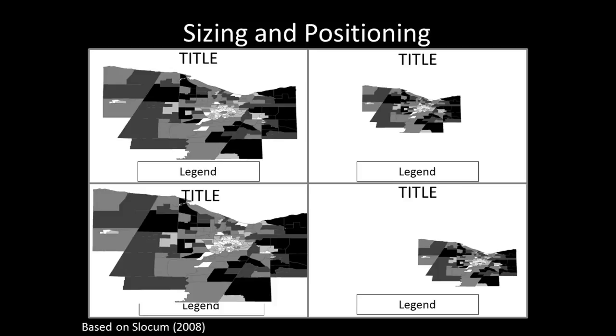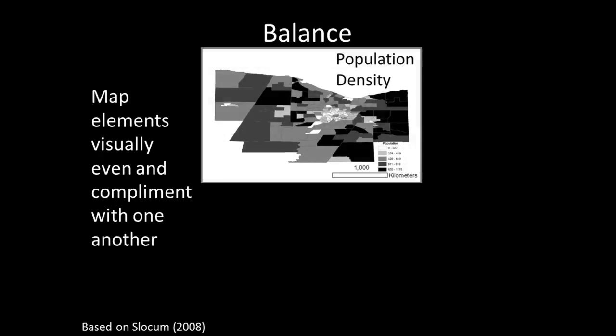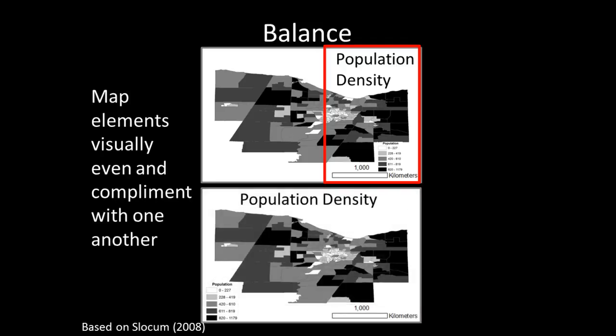A topic closely related to sizing and positioning is map balance — the idea that elements on the map are visually even and complement one another. This is an example of a poorly balanced map: it appears to visually tilt to the right as the title, legend, and scale bar are all on the right side. By comparison, this map has better visual balance, as the title has been centered over the map area and the legend and scale bar balance one another by being positioned on the bottom right and left. When designing a map layout to create good visual balance, it can be helpful to consider the available white space.